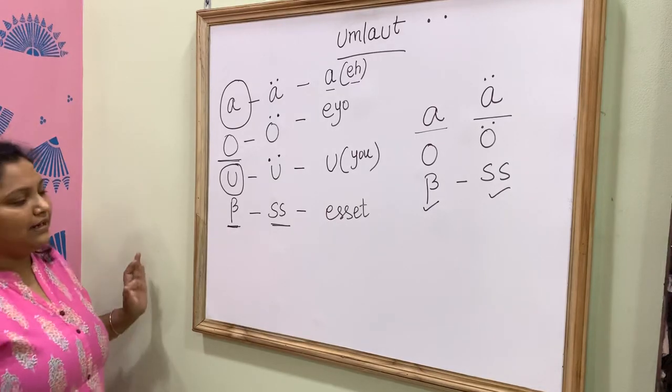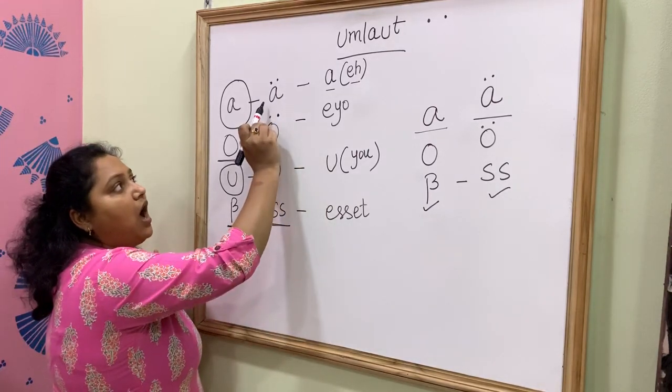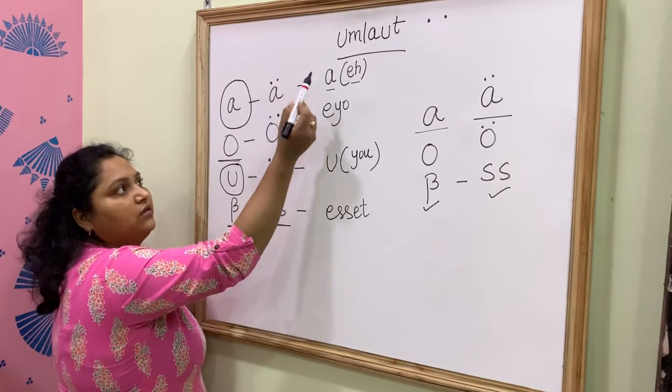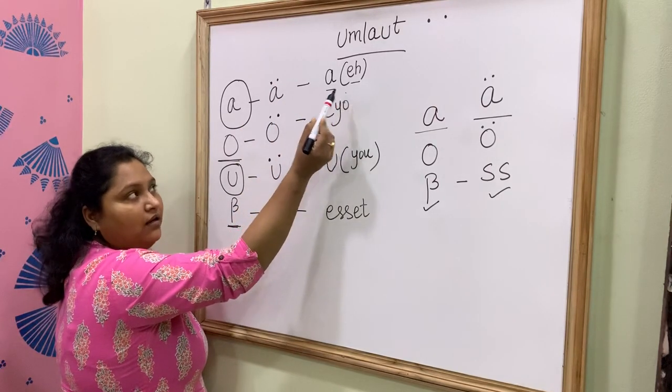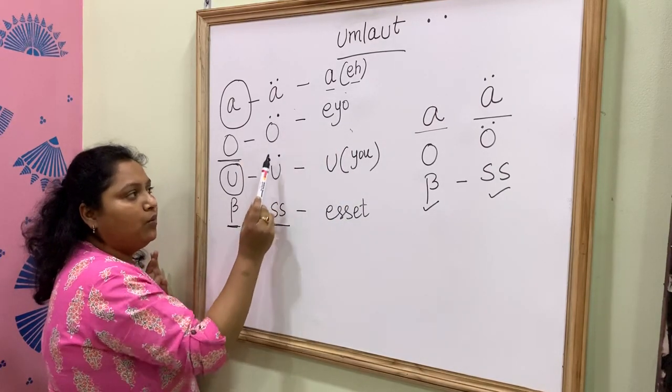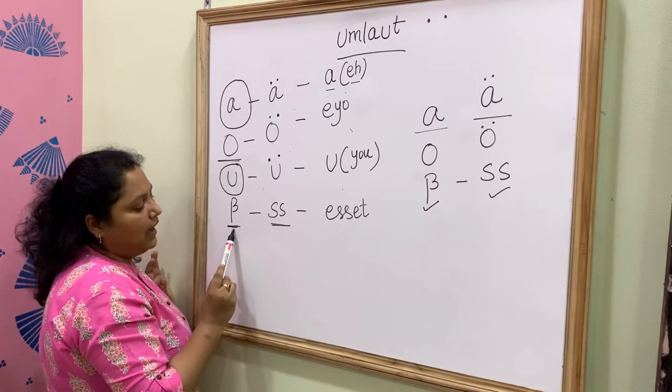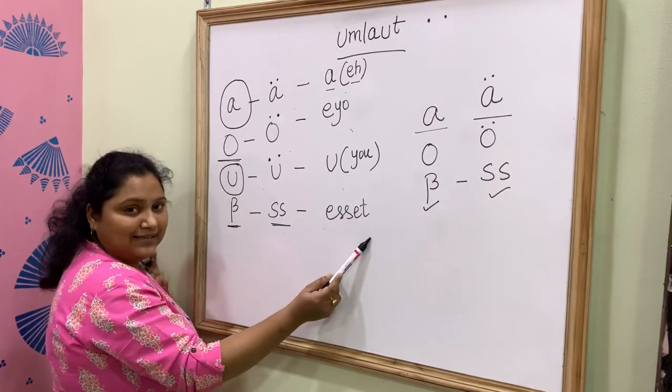Let's pronounce the letters again. A umlaut E, O umlaut EO, U umlaut U, and this is S-H sign.